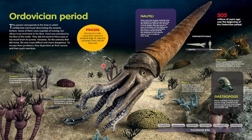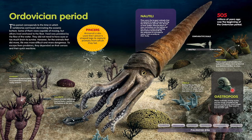You can see a trilobite, which we saw in the last slide, and a nautiloid, which was a very large creature at 2.5 meters long — much longer than the creatures of the last period. There is also a gastropod similar to modern-day snails, crinoids, and bryozoans. Coral also came in this period.